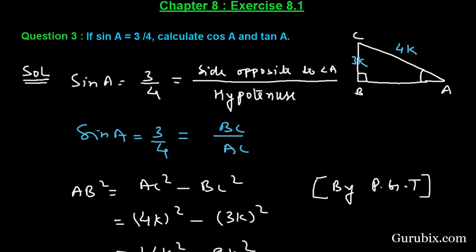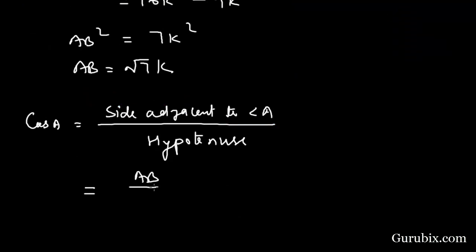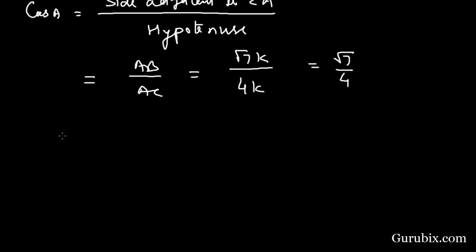And now we shall find cos A. It will be equals to side adjacent to angle A over hypotenuse. So here we have AB over AC. This equals root 7K over 4K, which equals root 7 over 4. Therefore cos A is equals to root 7 over 4.